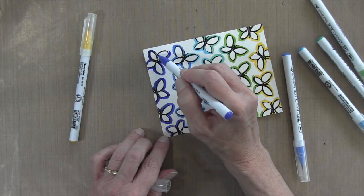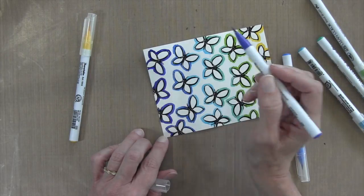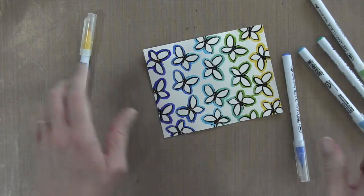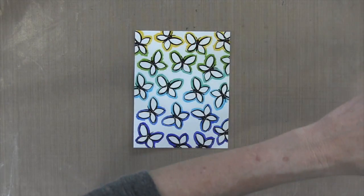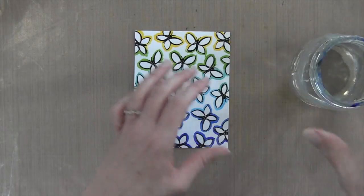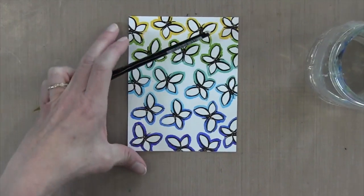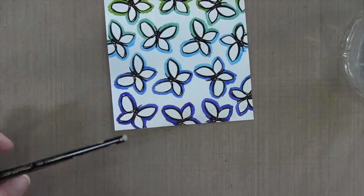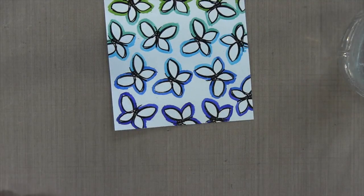They're all from the 48 count set. Now it's time to apply some water. I have a Loew-Cornell 7020 Ultra Round brush number 9 and a glass of water. I'm going to zoom in so you can see what I'm doing here.